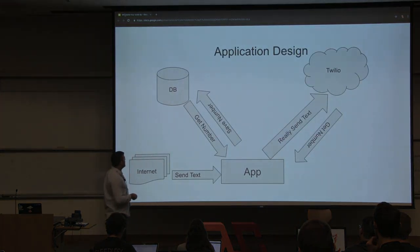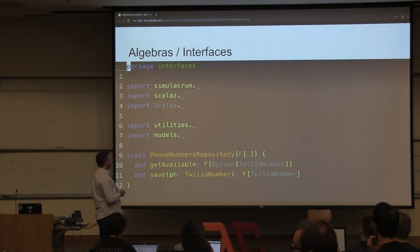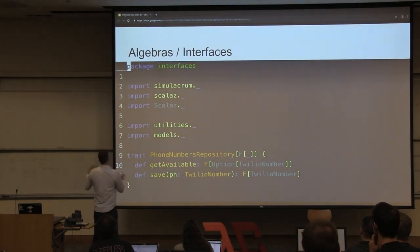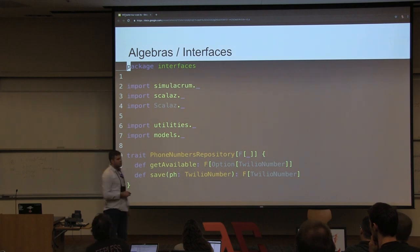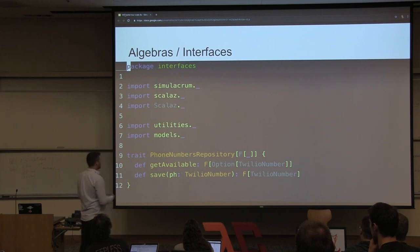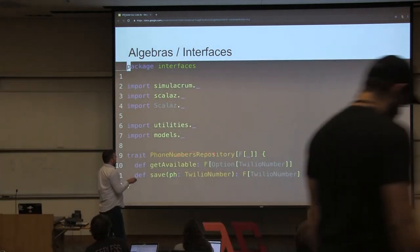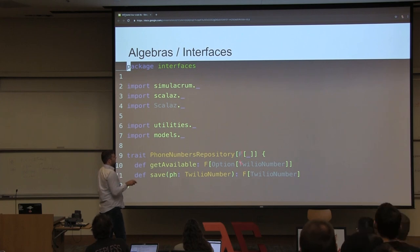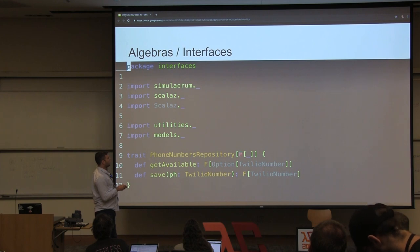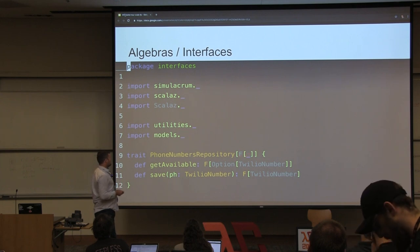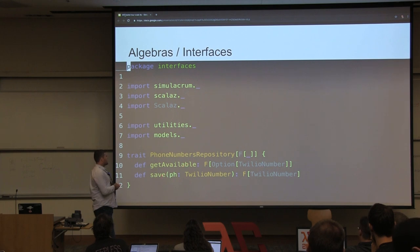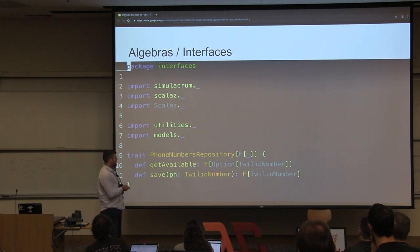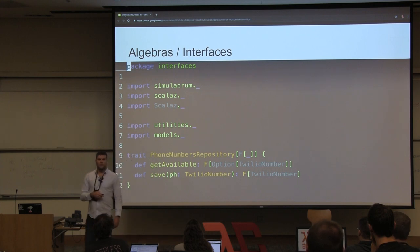How we turn these arrows into effects we can abstract over is we're going to use traits. In Sam's book he calls these traits 'algebras,' but we're just going to call them interfaces. If you're familiar with Java, this trait can just be thought of as an interface. We know that we're going to need to provide some effects to get any of these answers, so we're going to put the shape of our effect in here. We don't know what F is going to be yet, and then we turn our arrows — getAvailable and savePhoneNumber — into functions that return an F of some result.